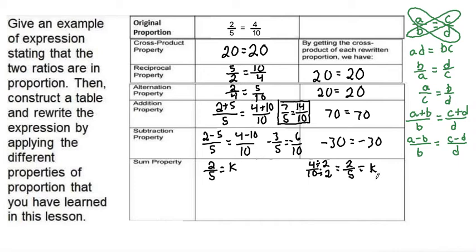And to do the sum property, we want to do a plus c over b plus d and see that that is also the same constant of proportionality.